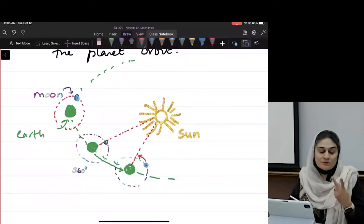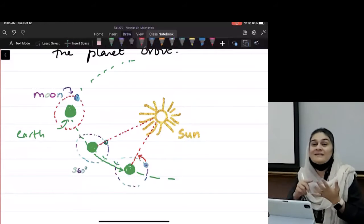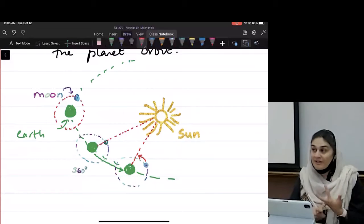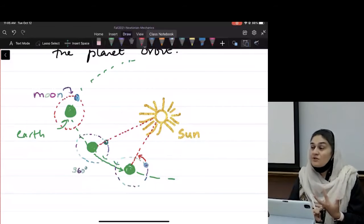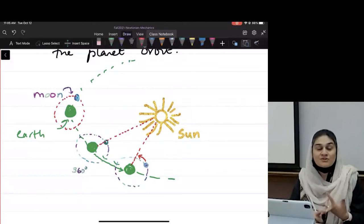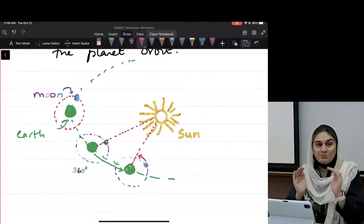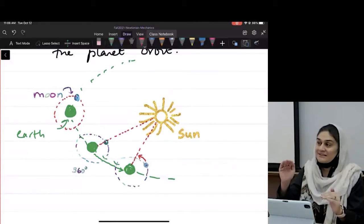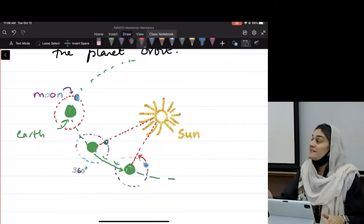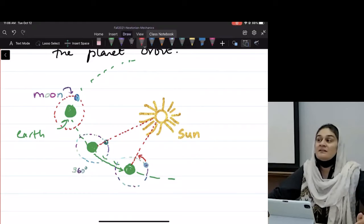So we call these two different things with two different days. One is called the sidereal period. The other one is called the synodic period. So the sidereal period is the time it takes to go 360 degrees. The time it takes for the moon to complete 360 degrees is called the sidereal period of the moon. The time it takes from the phases to change is called the synodic.